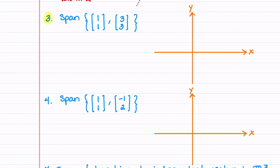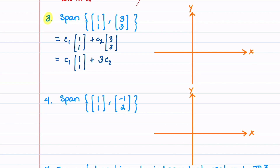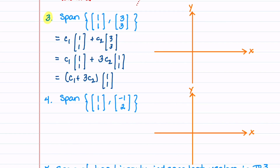In example 3, we look at the span of two vectors (1,1) and (3,3). The span equals C1 times (1,1) plus C2 times (3,3). Notice that (3,3) can be written as 3 times (1,1), so we can write the span as (C1 plus 3C2) times the vector (1,1). This tells us that all linear combinations lie along the same line, so the span in example 3 is also a line in R2.